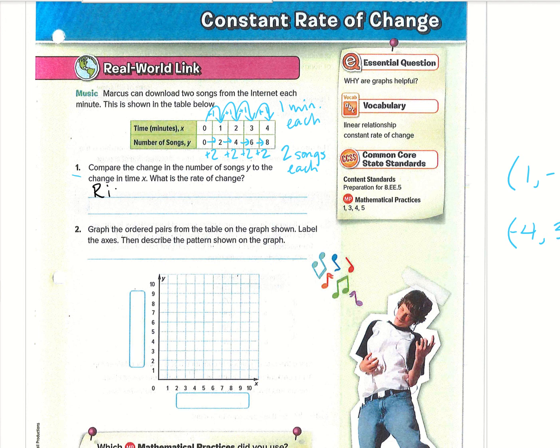So our rate of change is going to be rise over run. This is really important to have written down: rise over run. This is the same as y over x. For this one, all we need to do is plug in the change in y, so plus 2 or positive 2, and then the change in x, which is that positive 1. So 2 over 1, which then can be simplified to 2. Our rate of change is going to be 2.